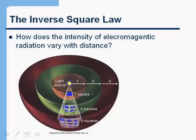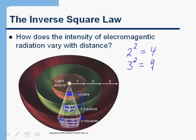This shows that as the distance increases, the intensity goes down because the light is being spread over more and more area. Specifically, it goes down as the square of the distance: even though the distance doubled, the area quadrupled. If the distance is three times as much, the area that the light spreads over is three squared, or nine times as much. So the intensity decreases with the distance squared — that's what we mean by an inverse square law.